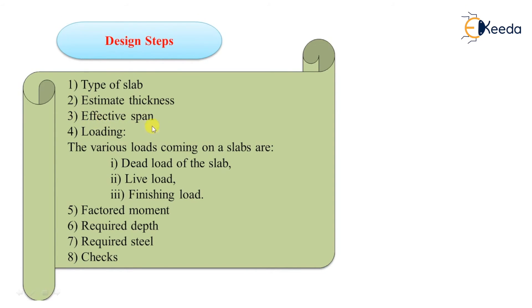Then, we have to estimate the thickness from the IS recommendations. Then similarly, effective span. After that, the most important part of that design is to calculate loading. We have to calculate self weight of slab, then live load and finishing load. Live load and finishing load can be taken from IS 875 part 1.